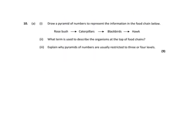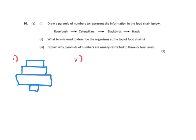Here's an exam question: draw a pyramid of numbers for the food chain — one rosebush (small bar), many caterpillars (larger bar), fewer blackbirds, and even fewer hawks. This gives an inverted pyramid of numbers. The organisms at the top of the food chain are called the top or tertiary consumers. Pyramids of numbers are usually restricted to three or four levels because of the large energy loss from level to level.